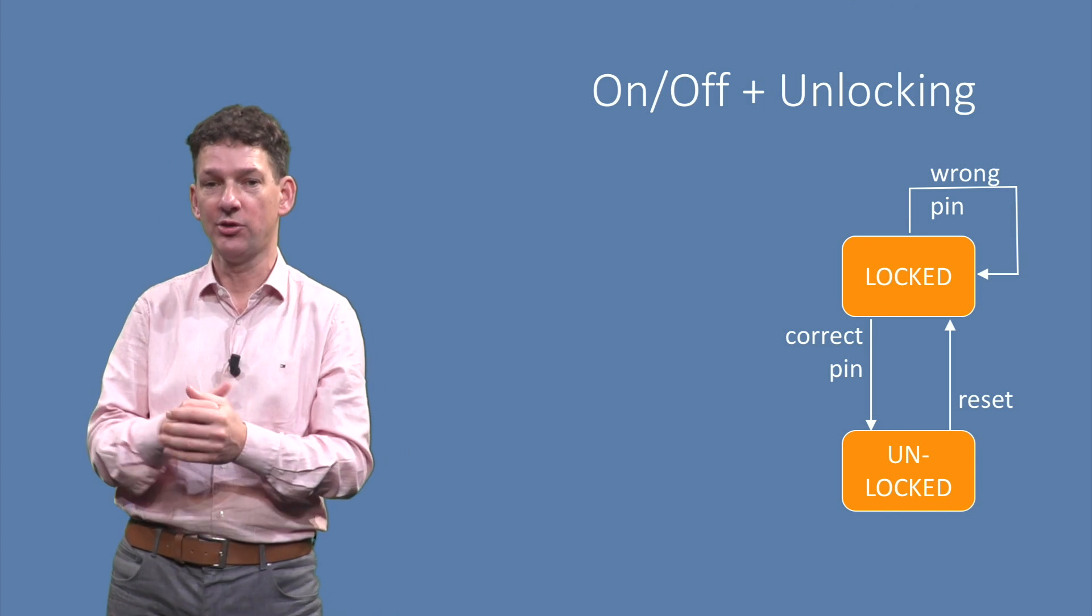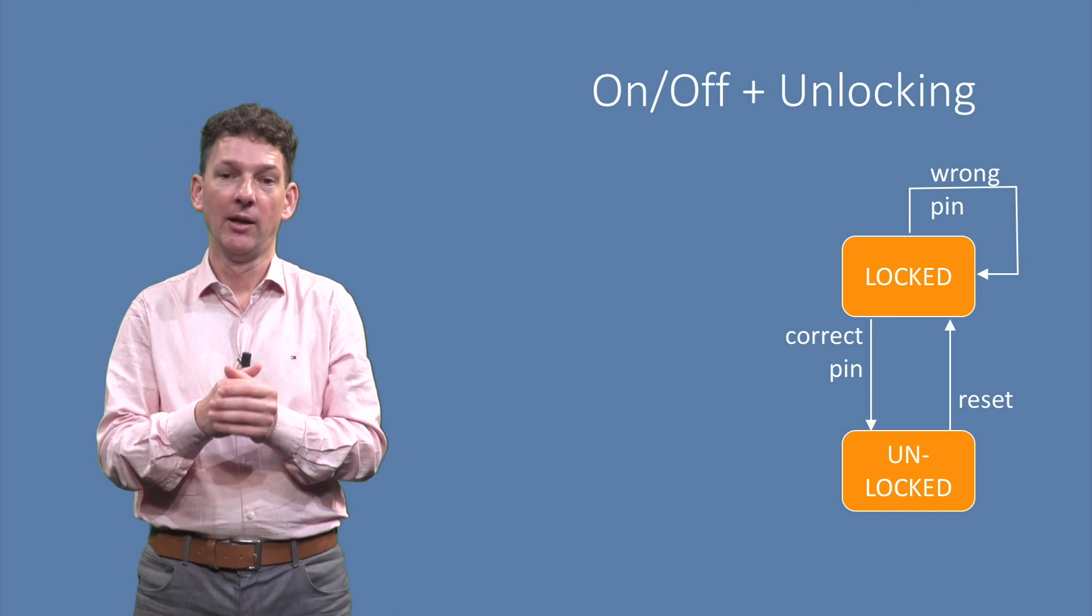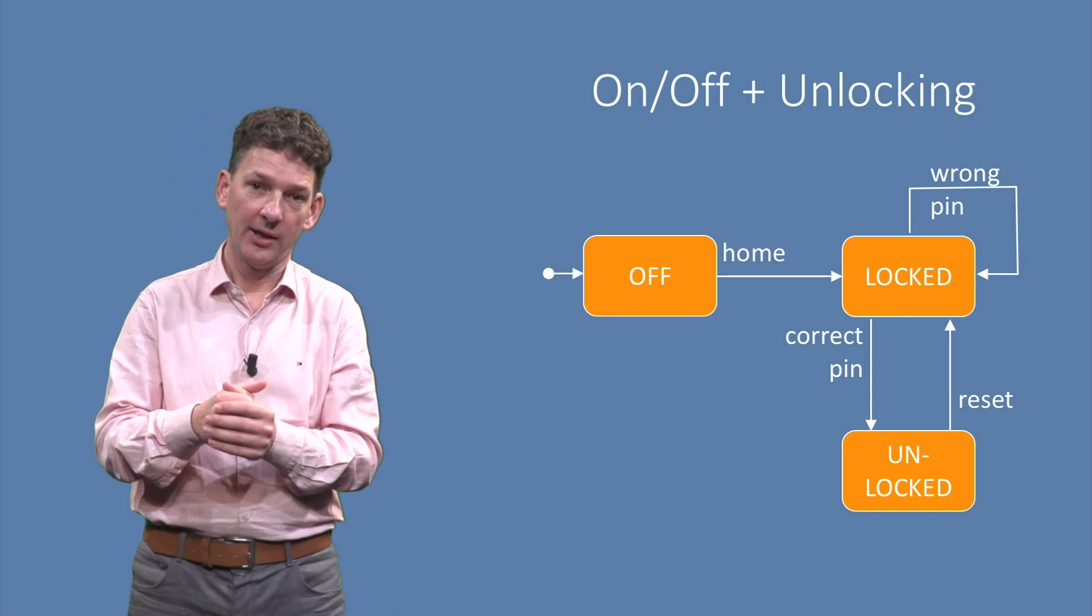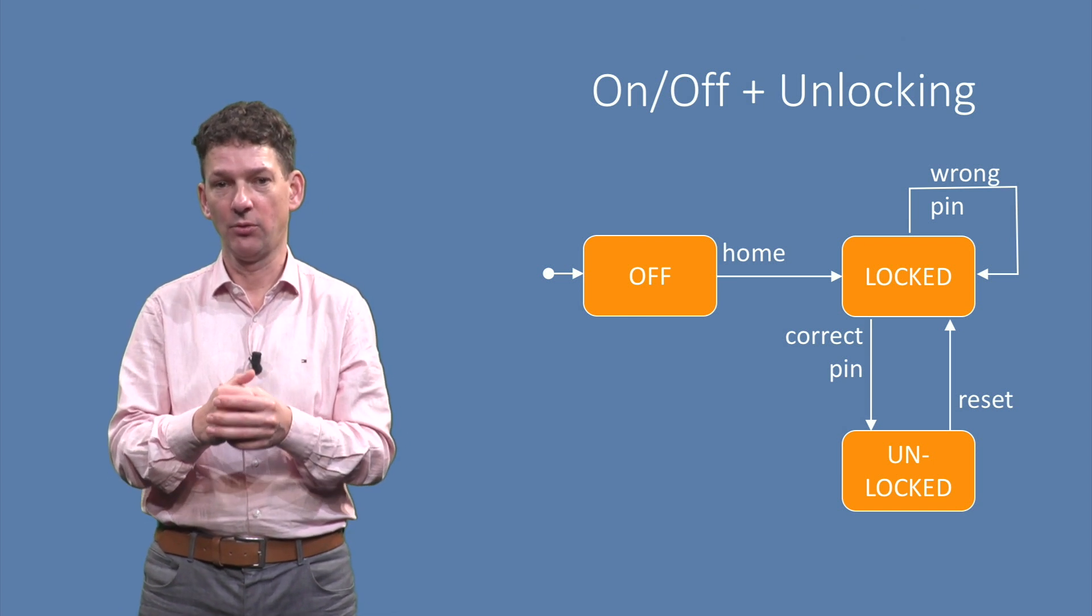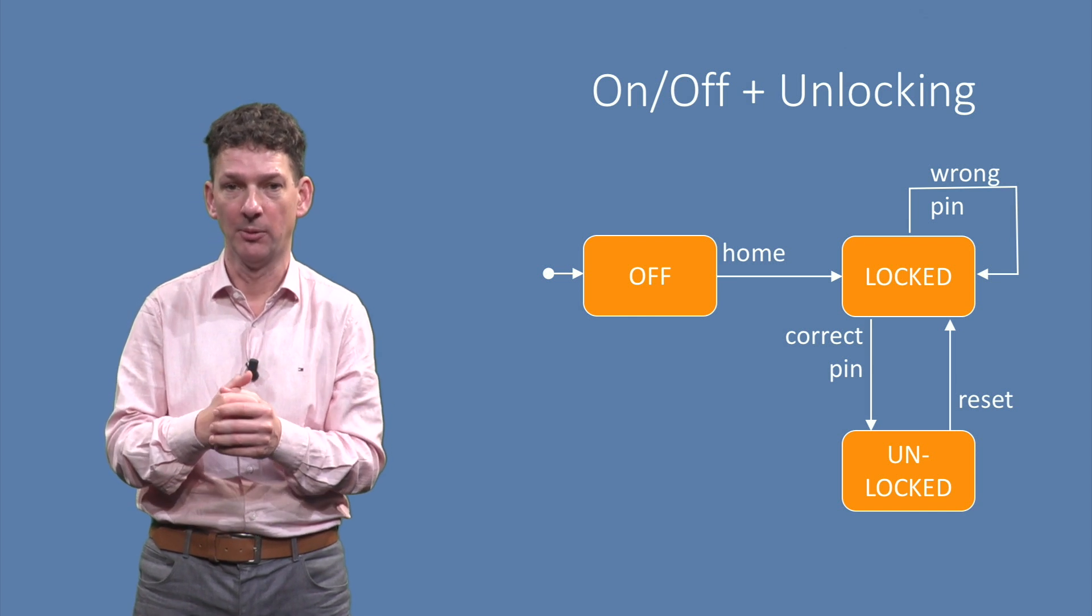Here we start with the unlocking state diagram. We can add the off state to this, together with the transition from off to the unlocked state, which is the initial state of the unlocking diagram.